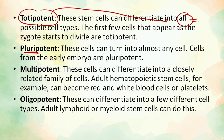Pluripotency is when a cell could turn into almost every cell type. Cells from the early embryo are pluripotent. A pluripotent cell can convert into almost every cell, but not the embryo itself. This is what a pluripotent cell is all about.